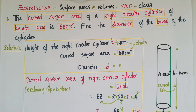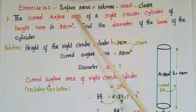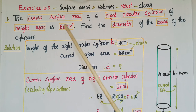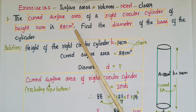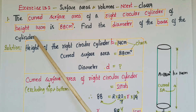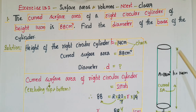Hello everyone, today I am going to tell the solutions of Exercise 13.2 from Surface Areas and Volumes from NCERT Class 9. This is the first problem: the curved surface area of a right circular cylinder of height 14 centimeters is 88 centimeter square. Find the diameter of the base of the cylinder.